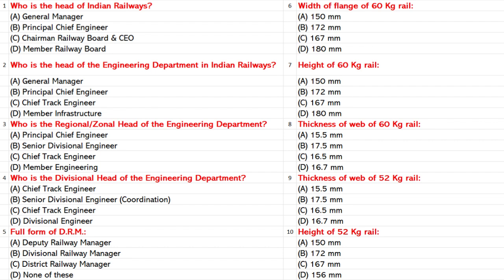Who is the head of the Engineering Department in Indian Railways? A. General Manager. B. Principal Chief Engineer. C. Chief Track Engineer. D. Member Infrastructure. Answer: D. Member Infrastructure.